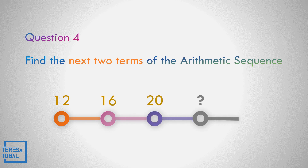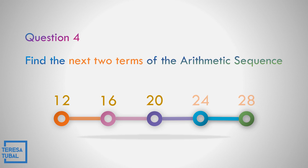Question number 4: Find the next two terms for 12, 16, and 20. Correct. The answer is 24 and 28. The common difference is equal to 4. Second term minus the first term: 16 minus 12 equals 4, so the common difference is 4.